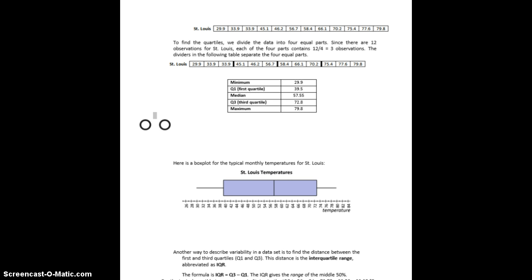We have 12 numbers here. This represents the 12 average temperatures for each of the 12 months in St. Louis. Before we can get into the measure of the variability, there's something called a 5. We will now continue in part 2 of the next video.